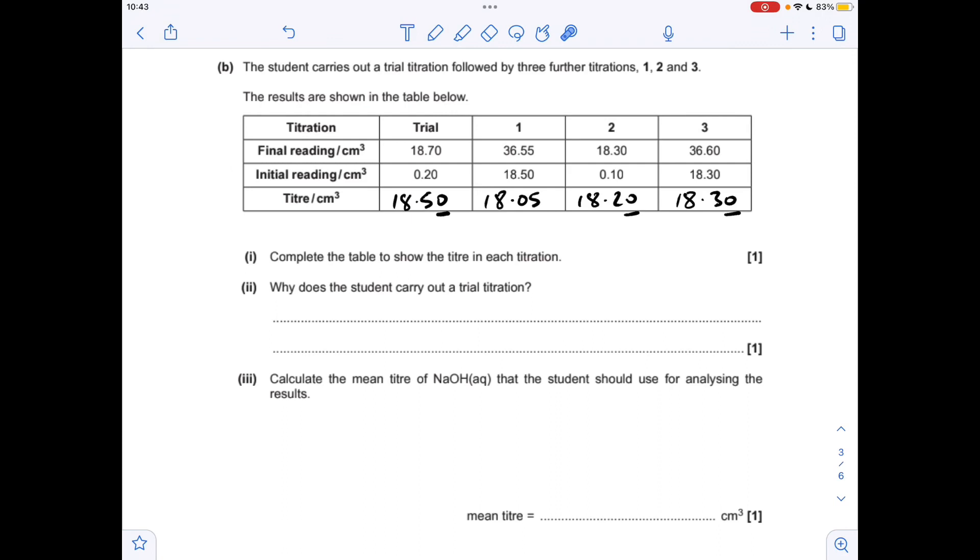Moving on to part B, you'll notice I've already put the answers in. I've underlined the zeros because they need to be there; you can't leave those out. Why do you carry out a trial titration? Well, that's basically just to get an estimate of the titre before you start doing the accurate titrations.